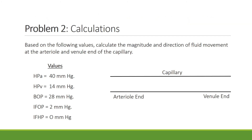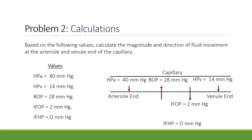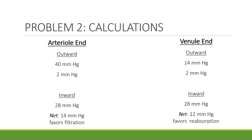Here's a second problem. See if you can place the arrows before looking at the answers. Remember that hydrostatic pressures are pushing pressures and osmotic pressures are pulling pressures. At the arterial end, outward forces are 40 + 2 = 42 mmHg, and the inward force is 28 mmHg. The net value is 14 mmHg favoring filtration. At the venule end, outward movement is 14 + 2 = 16 mmHg, and inward movement is 28 mmHg. The net value is 12 mmHg favoring reabsorption.